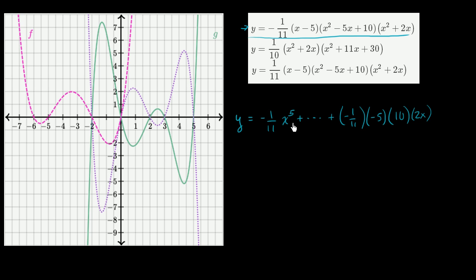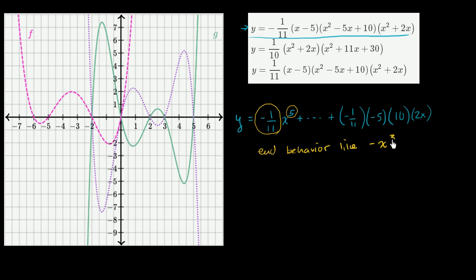This form lets us immediately think about the end behavior. We look at the coefficient on the highest degree term and whether that degree is odd or even. Since we're dealing with an odd degree polynomial — x to the fifth — and the coefficient is negative, this has end behavior like negative x to the third. When x is really negative, the value is really positive; when x is really positive, the value is really negative.